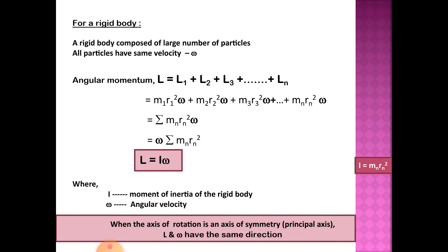This is equal to summation of mn rn squared omega. Then this equals omega into summation of mn rn squared. This sum mn rn squared is equal to I. Here I is the moment of inertia of the body about the axis passing through O.